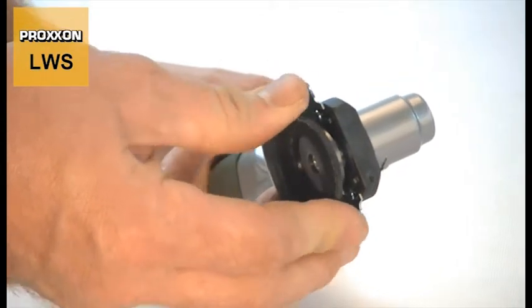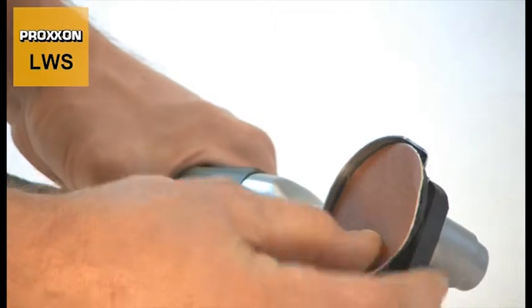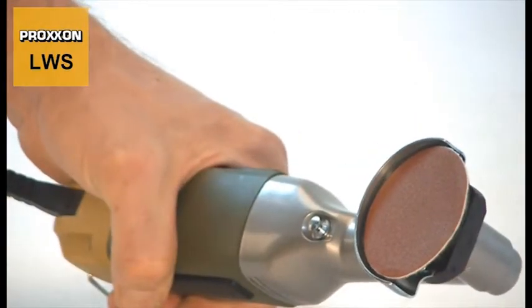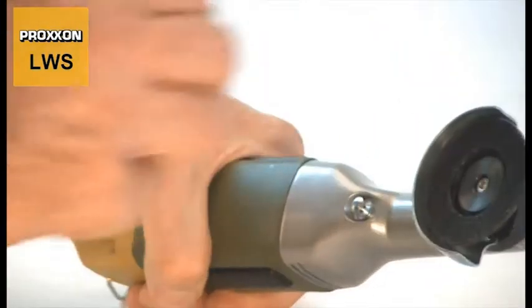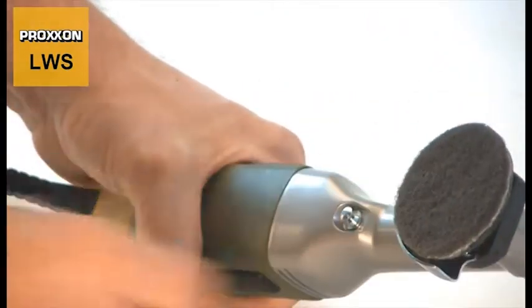Slight bulges in the workpiece can be compensated by means of our rubber backing disc. It is equipped with a velcro lining, allowing the use of our corundum sanding discs or of a special sanding fleece.